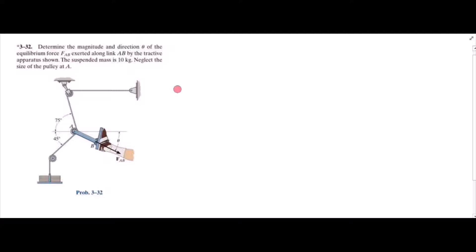This is problem 3-32 from R.C. Hibbeler Engineering Statistics 12th edition. According to this problem, we have to determine the magnitude and direction of the force FAB, and we have also given a suspended mass of 10 kg. We can neglect the size of the pulley at A.